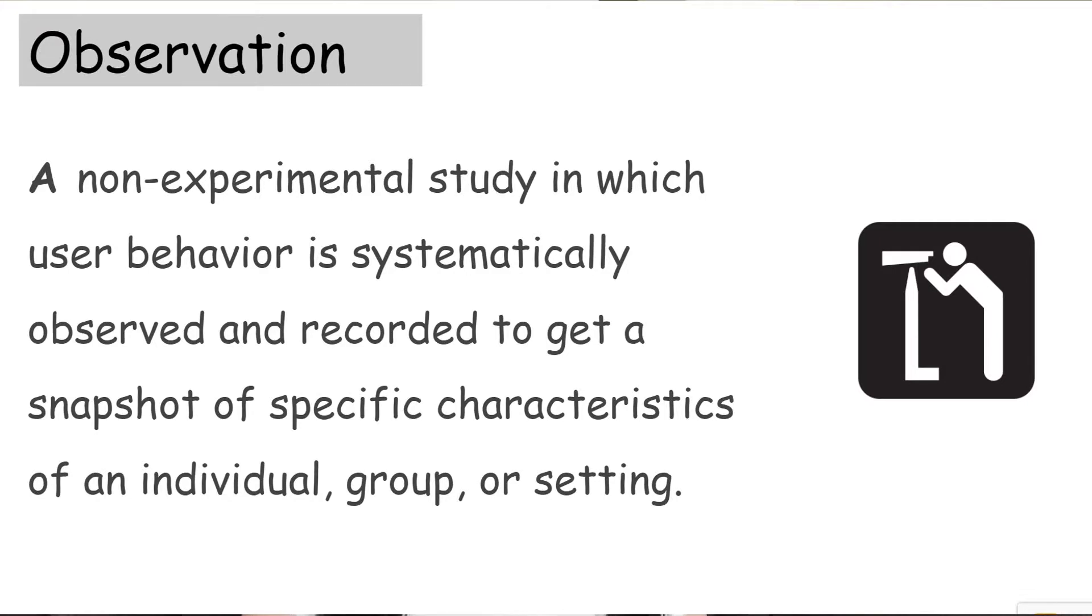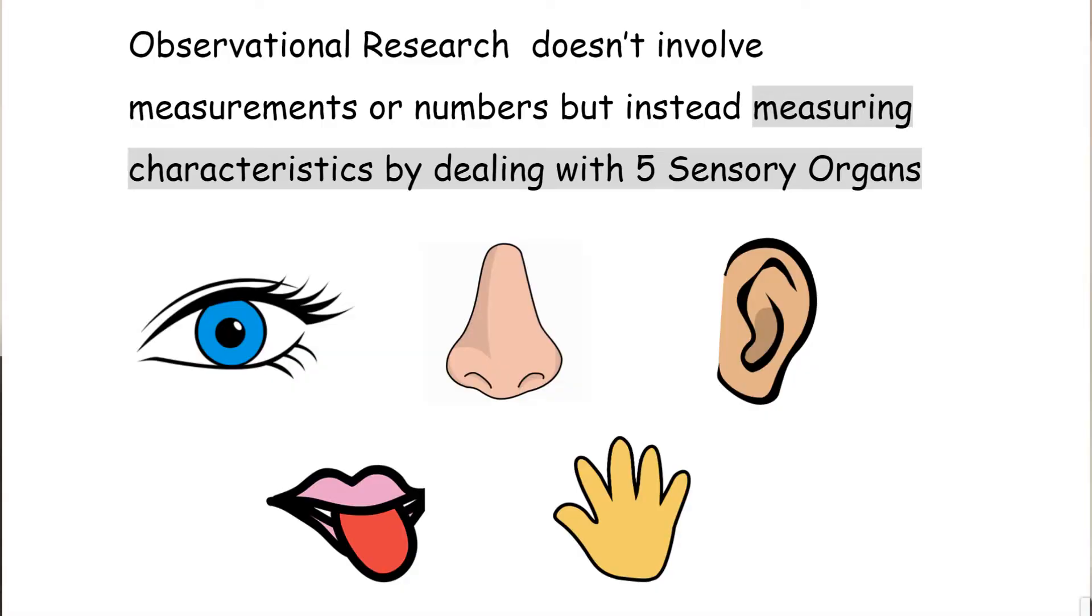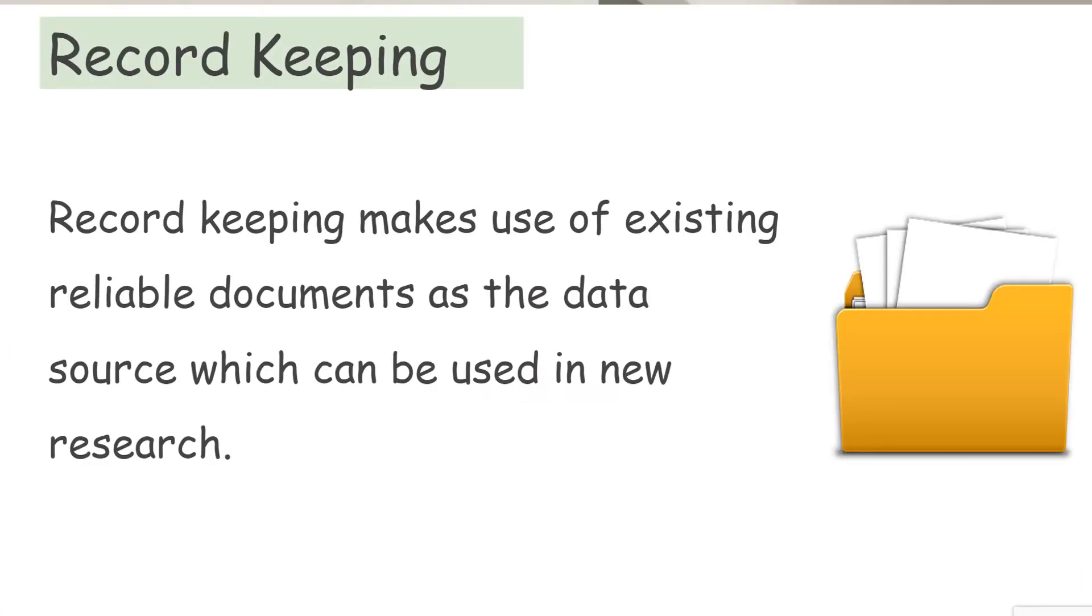Then you have observational research. It's a non-experimental study in which user behavior is systematically observed and recorded. Observational research does not involve measurements in numbers but involves measuring the characteristics by dealing with five sensory organs.